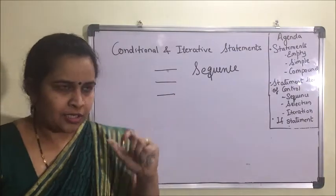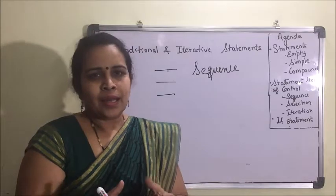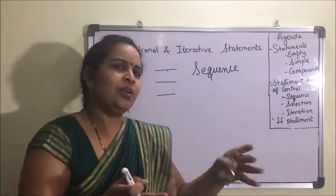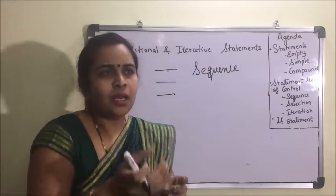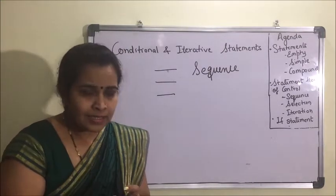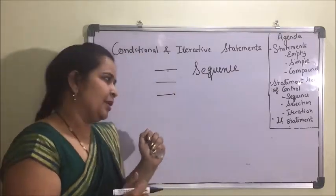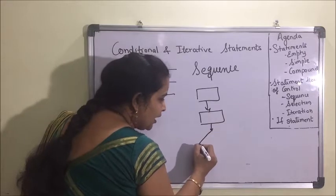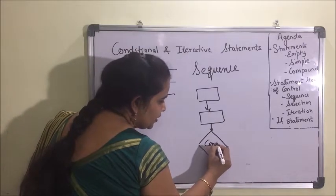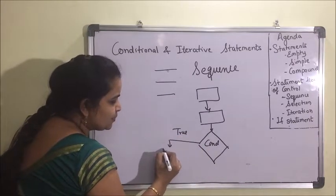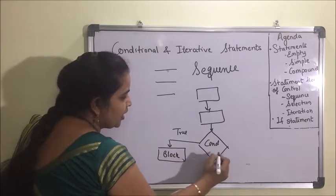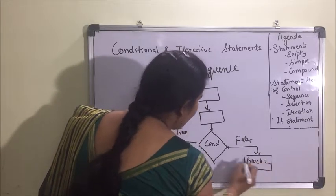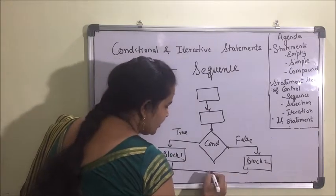The next type is selection. For example, suppose I want to buy a saree — if it is green I will buy it, if it is red I will not. There is a selection criteria based on a condition. In flow of control terms: one statement executes, then a condition is checked — if true, one block of statements executes; if false, another block executes.